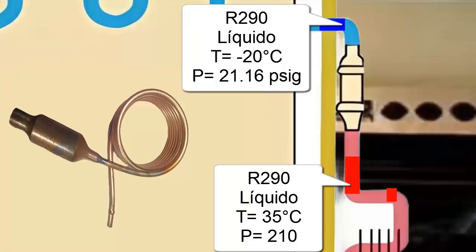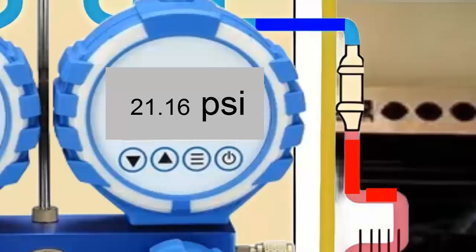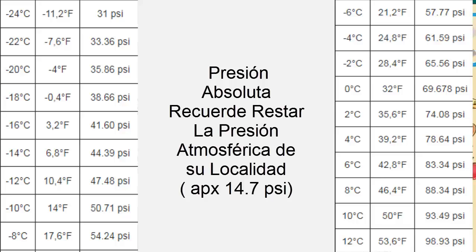The R290, now in a liquid state with low pressure and temperature, returns to the evaporator to start the refrigeration cycle again. On the screen, we are displaying other absolute pressure values usually used with R290.